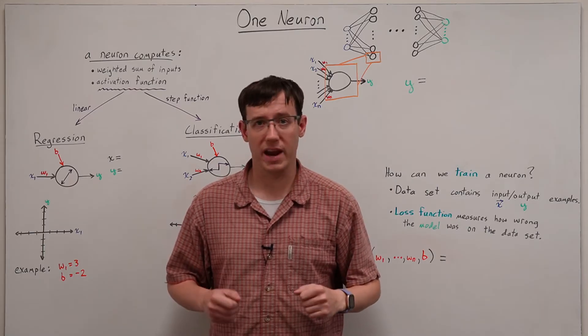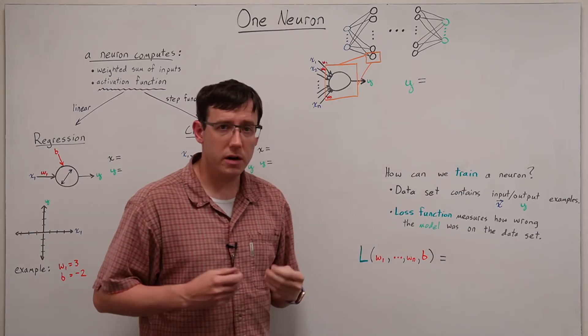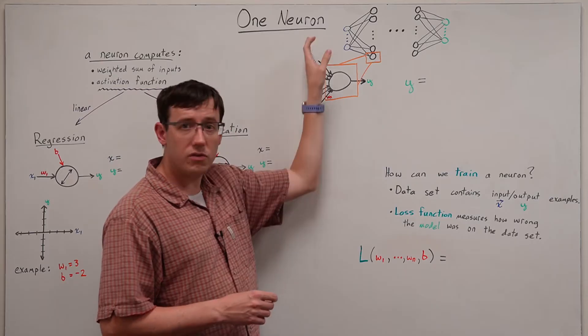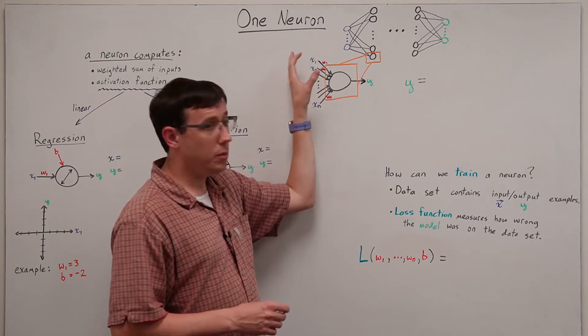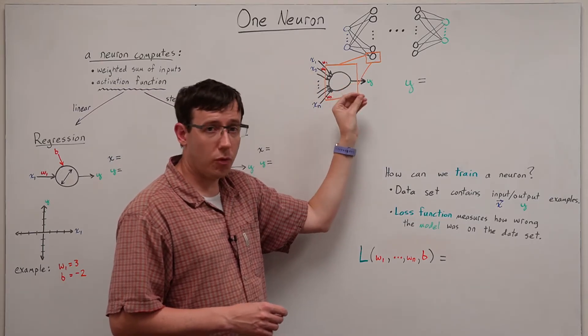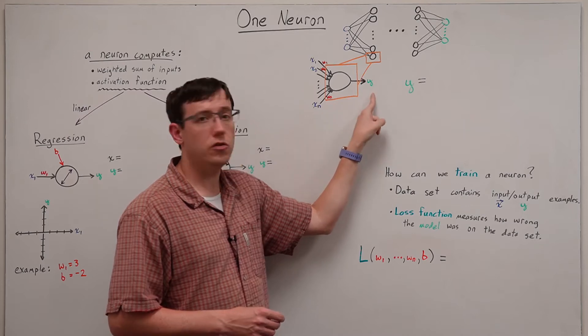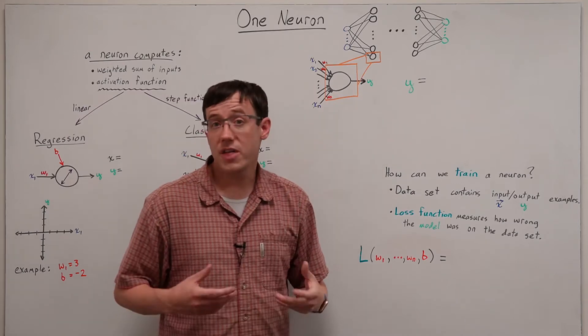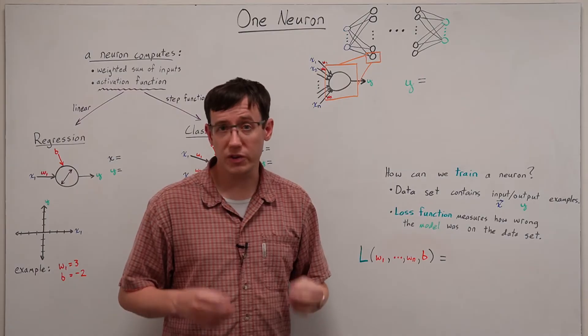And how those models can be trained. A node in a neural network receives some number of inputs and performs a simple computation to produce a numerical output. That computation happens in two stages.